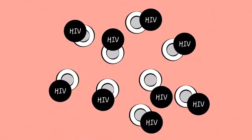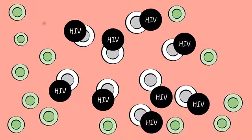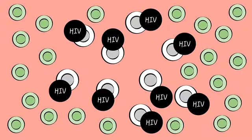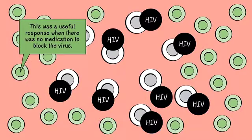Even before HIV is able to kill CD4 T cells, the immune system makes extra CD8 T cells to attack HIV. This was a useful response when there was no medication to block the virus.